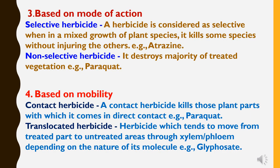The third classification of herbicides is based on mode of action. First is selective herbicides — a herbicide is considered selective when, in a mixed growth of plant species, it kills some species without injuring the others. Example: atrazine. Second is non-selective herbicides — it destroys the majority of treated vegetation. Example: paraquat.